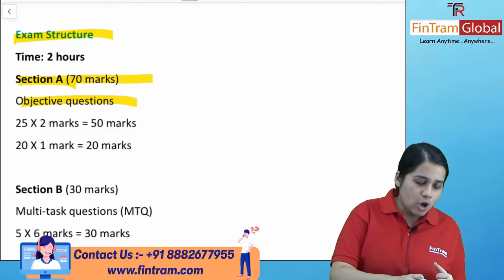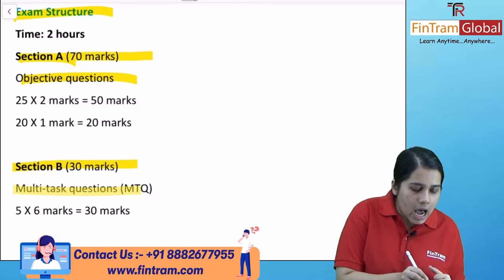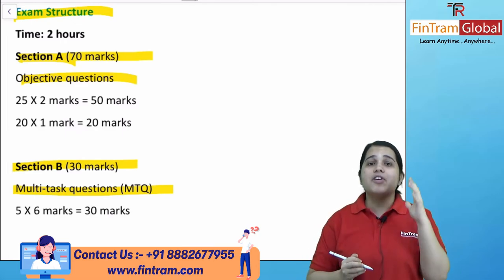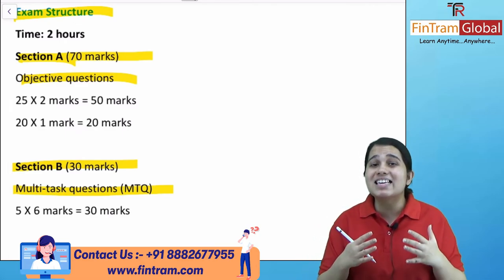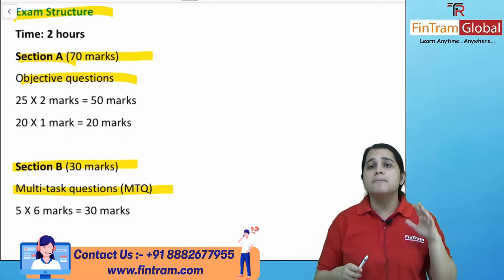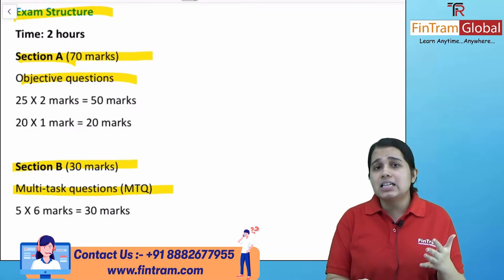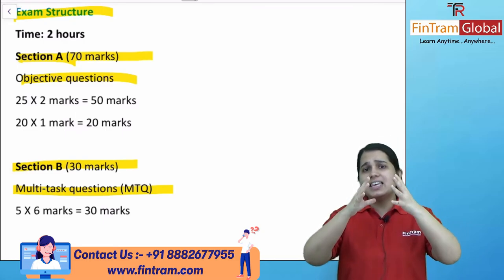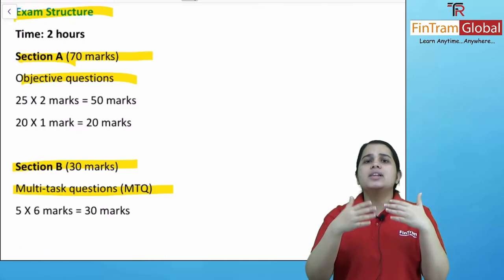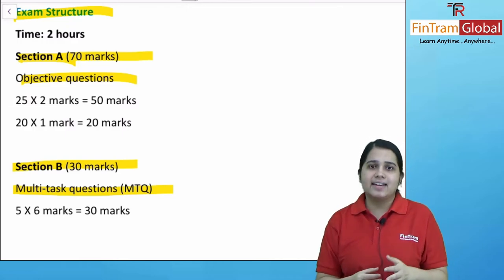Section B consists of your multi-task questions. Here you will get 5 questions of 6 marks each, making a total of 30. Your multi-task questions are basically questions wherein you will get a case study or a scenario, and you will get various MCQs based on that.